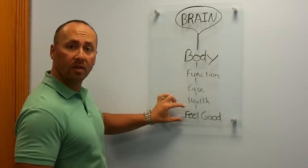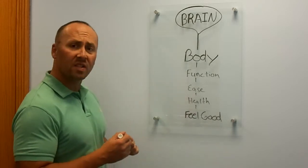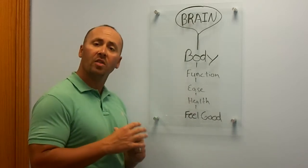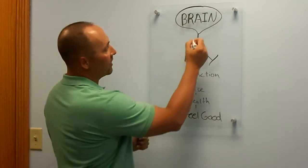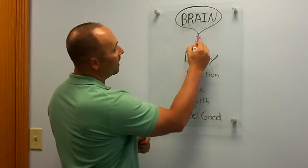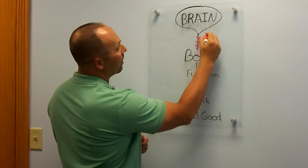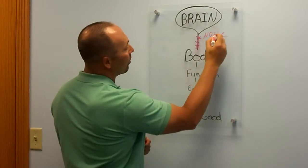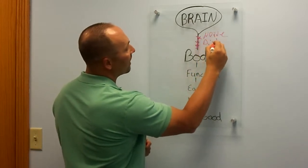Feeling good is nothing more than a symptom. When you get subluxation, which is a misalignment or loss of motion in your spinal cord, it creates nerve pressure in the spinal cord itself, or nerve disturbance, as I like to call it.